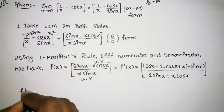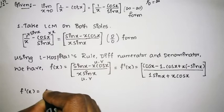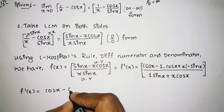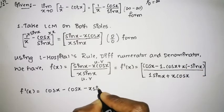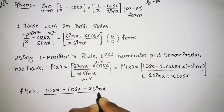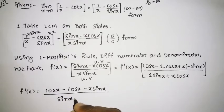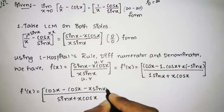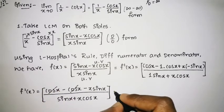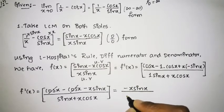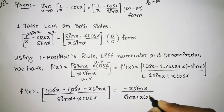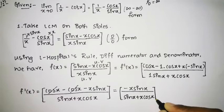So f'(x) equals cos x minus cos x — and plus times minus gives minus — so minus x·sin x, all divided by sin x plus x·cos x. The cos x terms cancel, leaving the numerator as minus x·sin x, over sin x plus x·cos x.